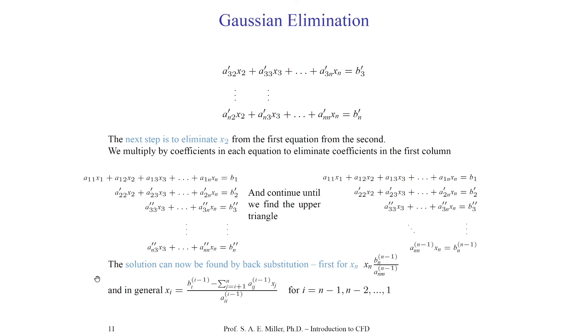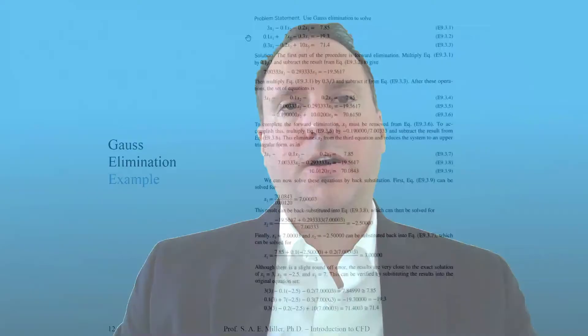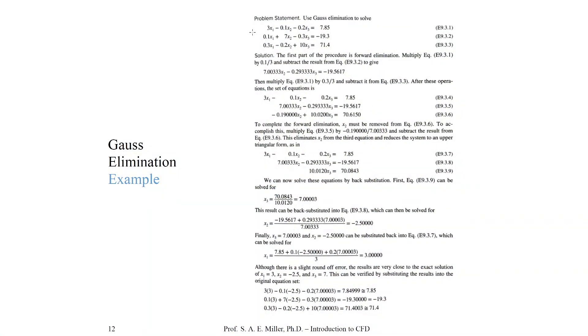Let's look at one example of Gaussian elimination with a 3x3 matrix A. The three equations are: 3x1 minus 0.1x2 minus 0.2x3 equals 7.85; second equation has 0.1, 7, and negative 0.3; third row has 0.3, negative 0.2, and 10. The right-hand side vector is 7.85, negative 19.3, and 71.4. Our goal is forward elimination. The first equation is already part of the upper triangle.